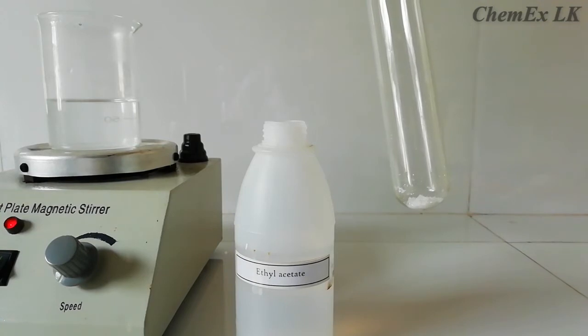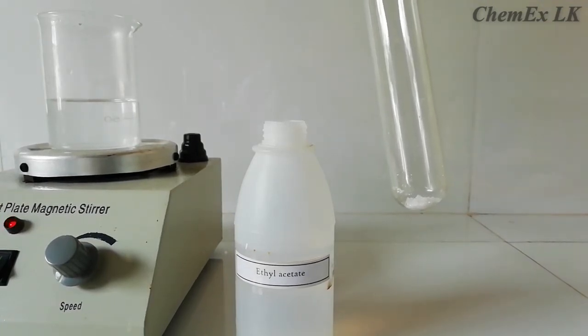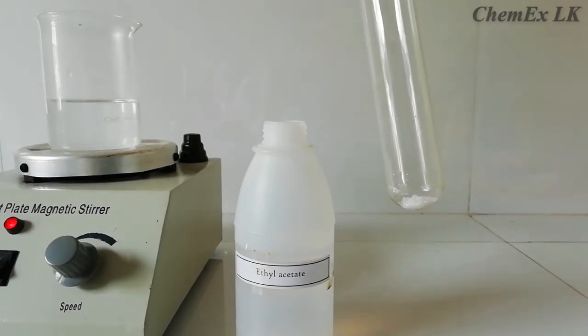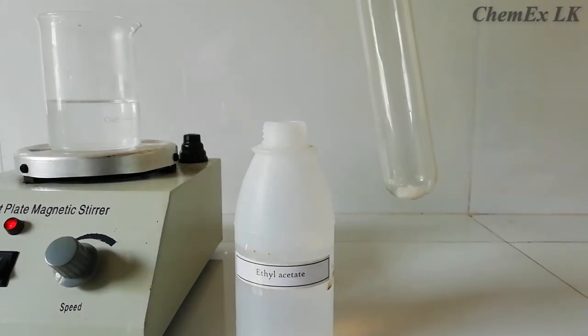For the ester test, in this boiling tube I have a few milligrams of hydroxylamine hydrochloride solid. So now we need to add our test sample. I am going to add about two to three drops of ethyl acetate here.